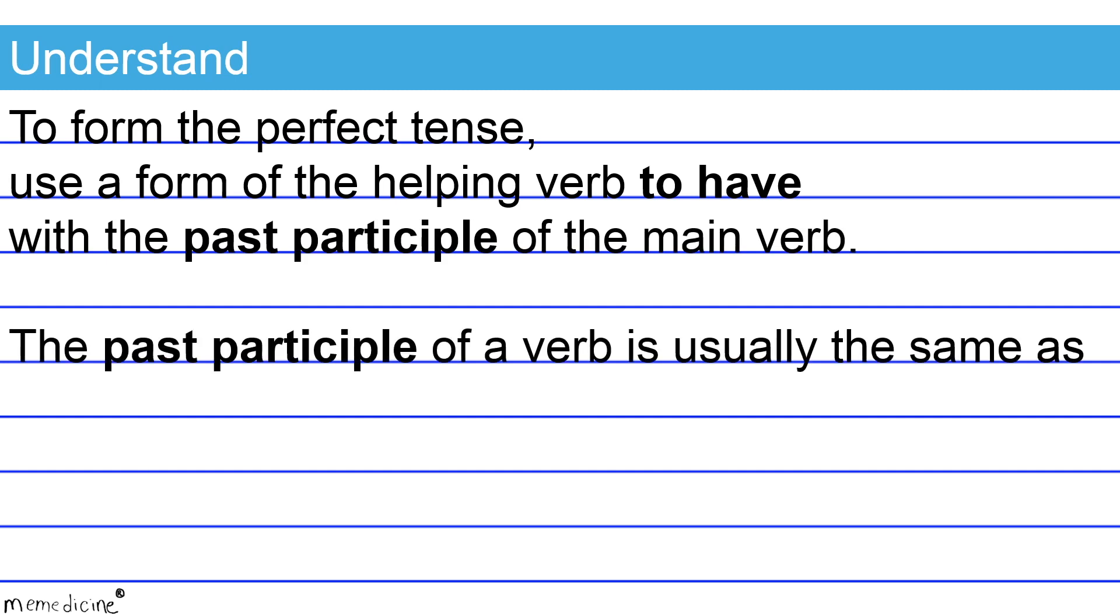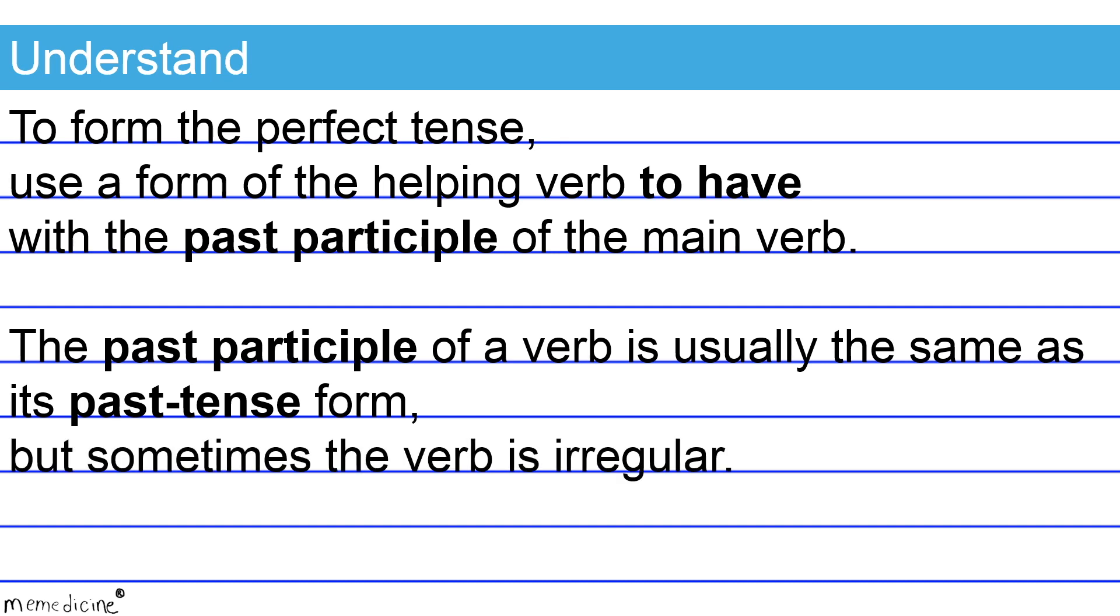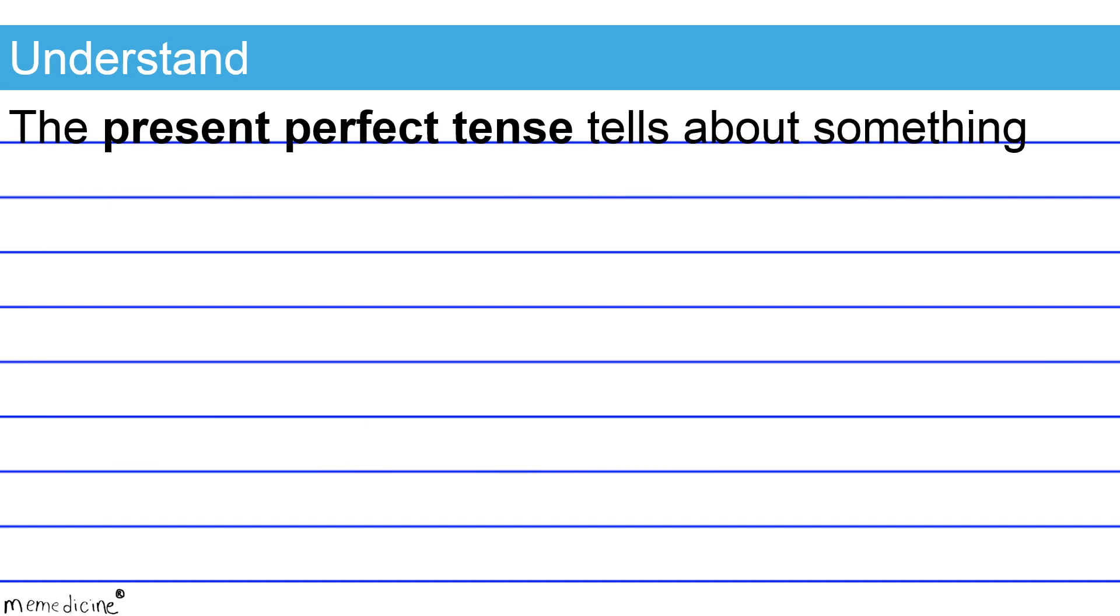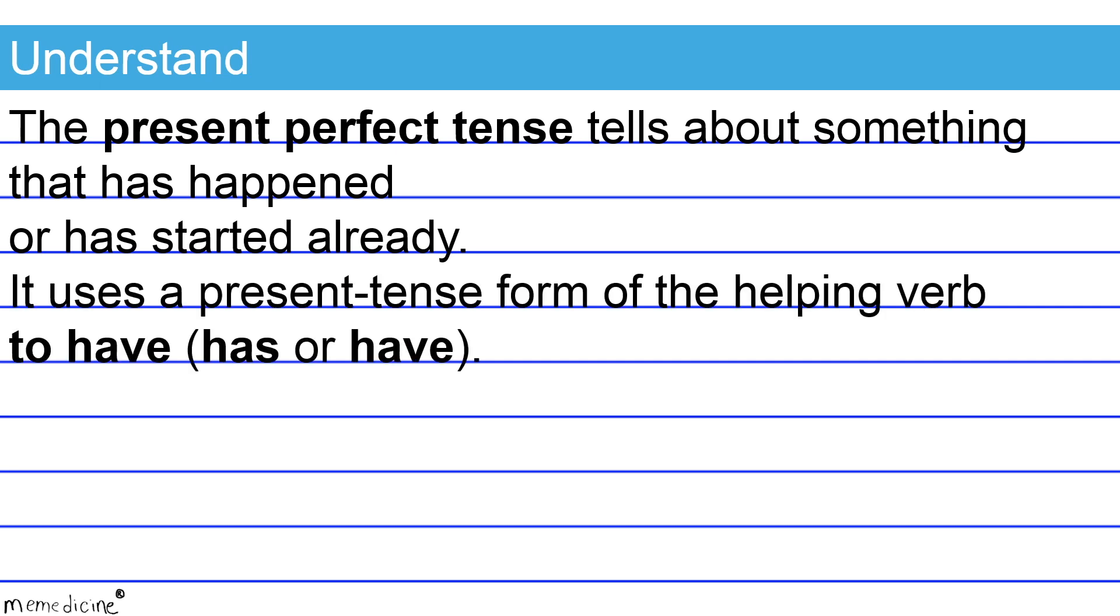The past participle of a verb is usually the same as its past tense form, its simple past tense form that is. But sometimes the verb is irregular. The present perfect tense tells about something that has happened or has started already. It uses a present tense form of the helping verb to have, which is either going to be has or have. Note that has corresponds to second person singular subjects. And have will be paired with the first person singular pronoun I, the first person plural pronoun we, the second person singular pronoun you and all third person plural pronouns.